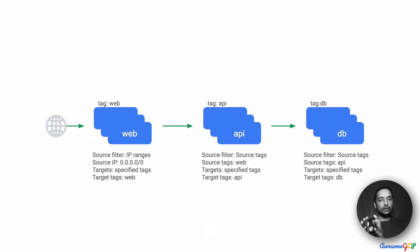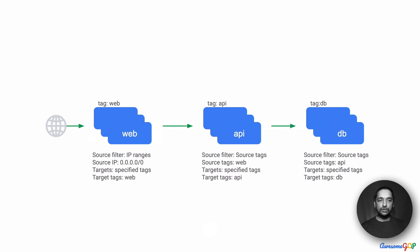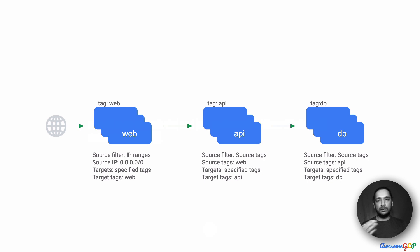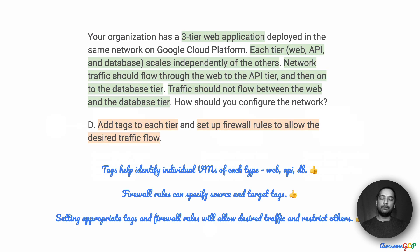Similarly for the other layers, we can allow traffic based on tags. For the API VMs, we say that the source tags have to be 'web', which means only traffic originating from VMs with the web tag is allowed into the API VMs, with the target being the API VMs. Similarly for the DB, the source tag has to be 'API' and the target has to be one of the DB machines. And of course when you open traffic in one direction, the reverse is automatically open too. Therefore this gives us the best configuration.